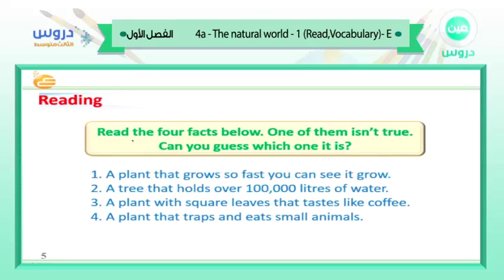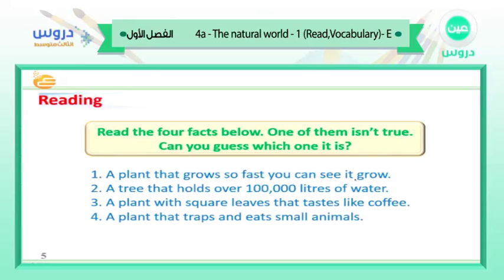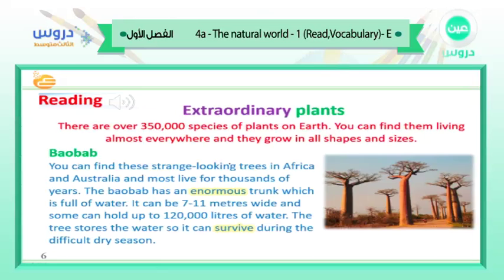Reading time: read the four facts below — one of them isn't true, can you guess which one it is? We have: number one, a plant that grows so fast you can see it grow; number two, a tree that holds over one hundred thousand liters of water; number three, a plant with square leaves that tastes like coffee; number four, a plant that traps and eats small animals. Please follow the audio, listen carefully.